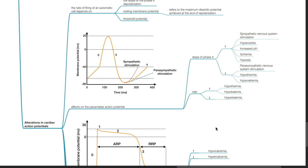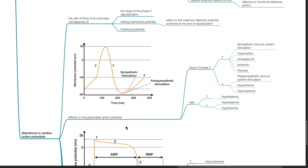The slope of Phase 4 is decreased by parasympathetic nervous system stimulation, hypothermia, and hyponatremia. The rate of firing of pacemaker action potentials is increased by hypokalemia and decreased by hyperkalemia and hypothermia.